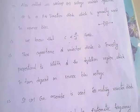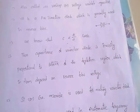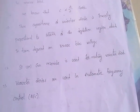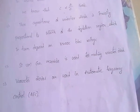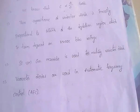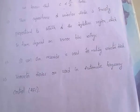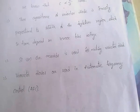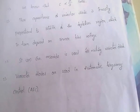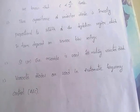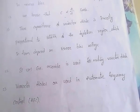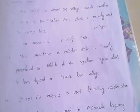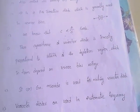The materials used for varactor diode are silicon or gallium arsenide — very important for all diodes. Varactor diodes are mainly used in automatic frequency control (AFC). In the next video, I will discuss remaining topics of electronic devices and circuits.